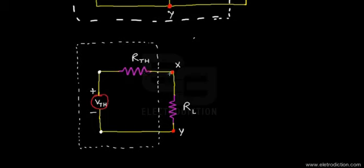In this reduced network, we've applied Thevenin's theorem in order to reduce the source network — the portion within the dotted white box — leaving only the equivalent Thevenin's voltage in series with the internal resistance of the source network. Note that Thevenizing the circuit is not actually a part of the compensation theorem; we've just done it in order to reduce our work and make things simpler to understand.